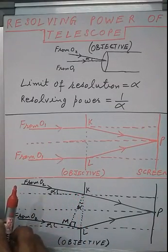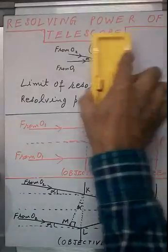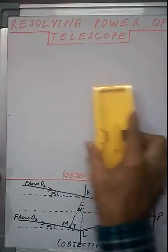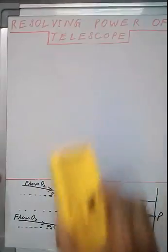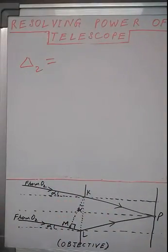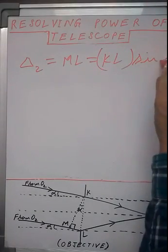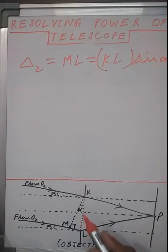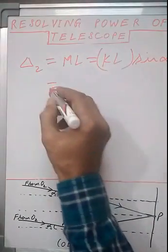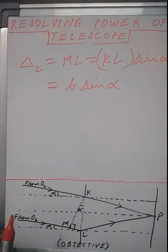So the path difference between two superimposing waves coming from second object O2 is ML. This can be shown to be equal to KL sine alpha. Now, KL is the diameter of the objective lens of the telescope — let us call this diameter B. So B sine alpha is the path difference between the two superimposing beams.